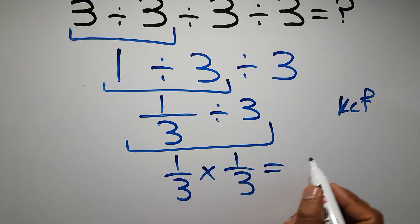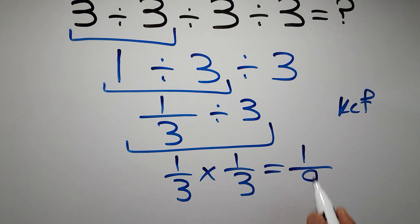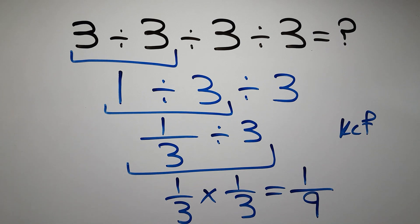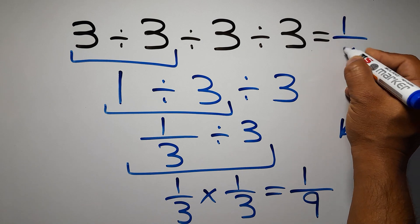equals 1 times 1 gives us 1, so 1 over 3 times 3 which equals 9, so we have 1 over 9. And this is our final answer to this problem. The correct answer is 1 over 9.